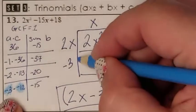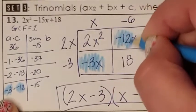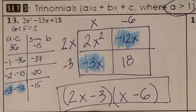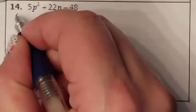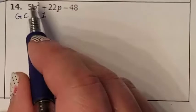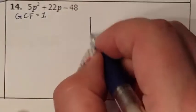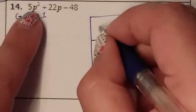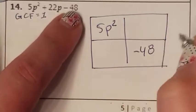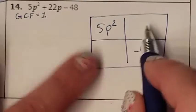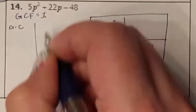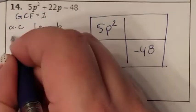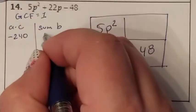Those two numbers went into the area model so we could split the B and then find the sides. Let's do problem 14. Is there a GCF they all have in common? There is not — my GCF is 1. Since A is not 1, I need to do the area model. The 5p squared comes here, the negative 48 comes here, and the middle we don't know how to split. We have to do the A times C adds up to B list. A times C is negative 240; my B is 22.